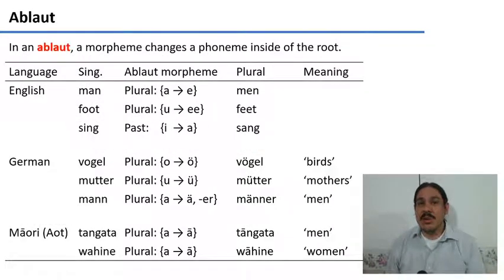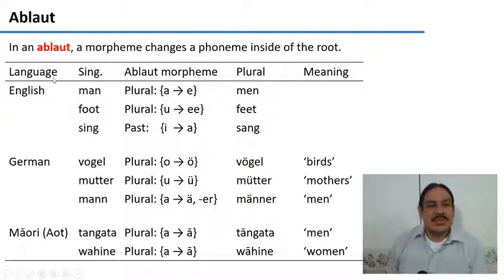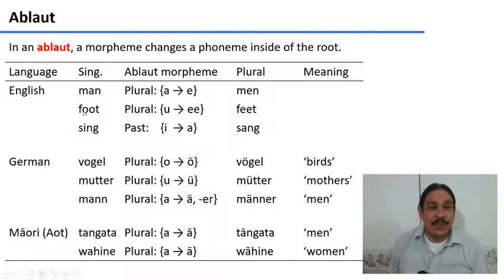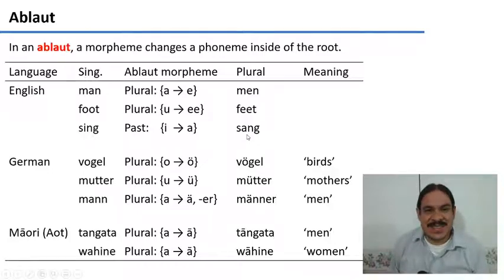Let's start with ablaut, which is a very common process in English. Ablauts are a process where a morpheme changes some phoneme, some component inside of a root. So for example, if you have the singular word 'man' in English, in order to make it plural, you need to change a part of the root — you need to turn the 'a' into 'e' for 'men'. In 'foot', you need to change it to 'feet'. Likewise, in 'sing', you need to change the vowel to form the past tense 'sang'. We call this type of morpheme an ablaut.